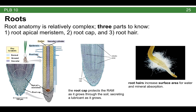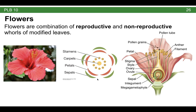Flowers are composed of a combination of reproductive and non-reproductive whorls of modified leaves. If we look at this hibiscus, you can easily identify the petals. From a top-down view, you can see that the plant flower is made of whorls of leaves, starting with the sepals on the very outside — which are non-reproductive — then the petals, which are also non-reproductive. Then the stamens, which are the male reproductive organs, and then the carpals, which are the female reproductive organs. Flower anatomy is relatively complicated, and we're going to spend a lot more time talking about it when we start talking about angiosperm reproduction.